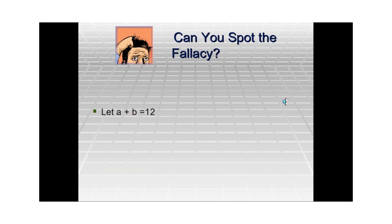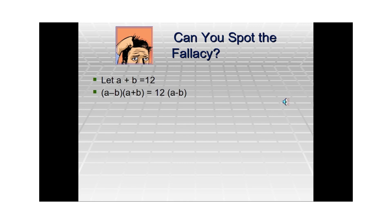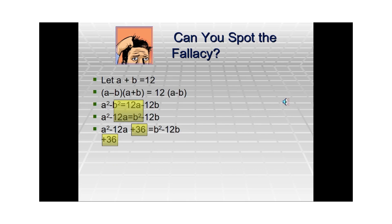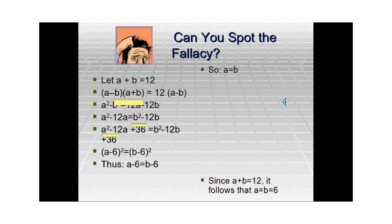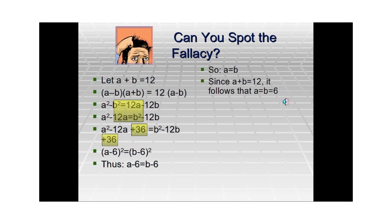Now let's see if you are able to spot the next fallacy. We begin by taking two numbers a and b whose sum is 12. Multiply both sides by (a − b). Now a minus b times a plus b is a² − b², and on the right-hand side you have 12a − 12b. Now add 36 to both sides: a² − 12a + 36 on one side, and b² − 12b + 36 on the other. You get (a − 6)² = (b − 6)². Which means a − 6 = b − 6, so a = b. Since a + b = 12 and a = b, it follows that a = b = 6.